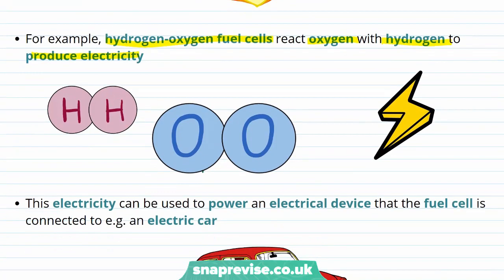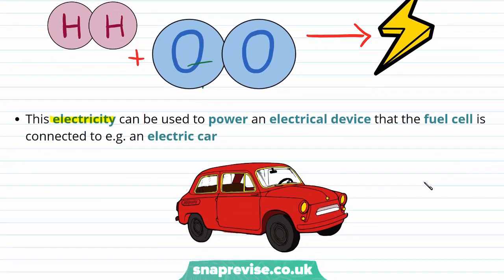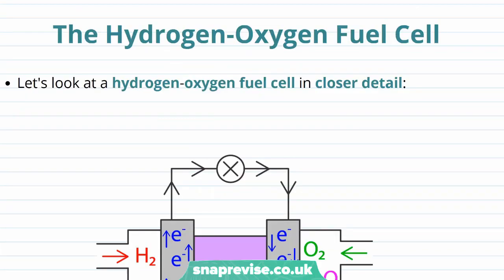We can see a representation of what happens in a hydrogen-oxygen fuel cell in this diagram. The electricity produced can be used to power any electrical device the fuel cell is connected to, for example an electric car. Hydrogen-oxygen fuel cells can be used to produce electricity for any purpose. We can now look in more detail at what's happening in the hydrogen-oxygen fuel cell that allows it to produce electricity.